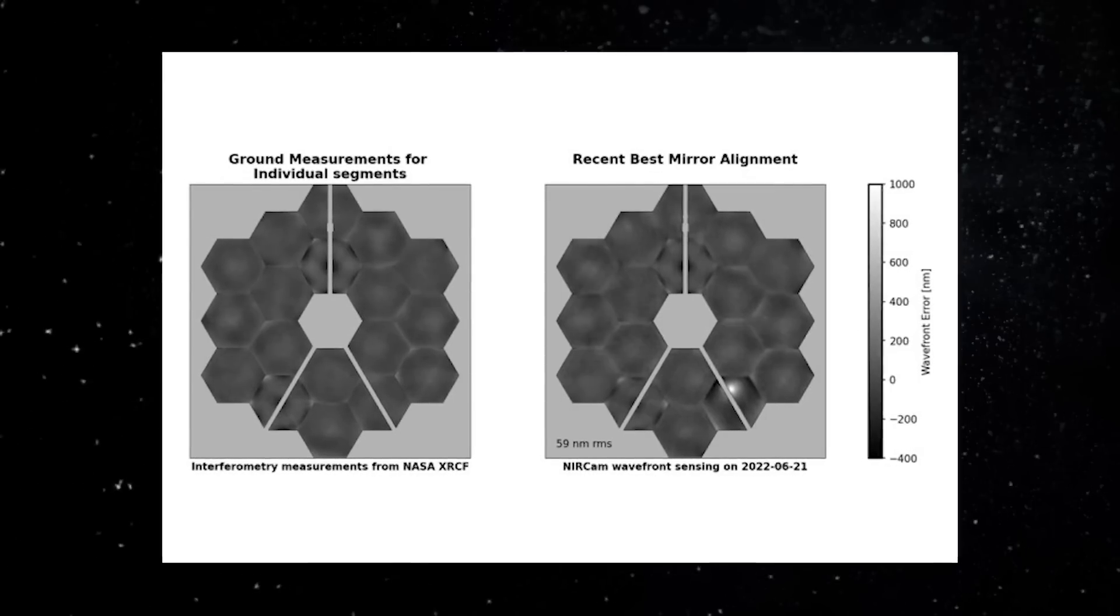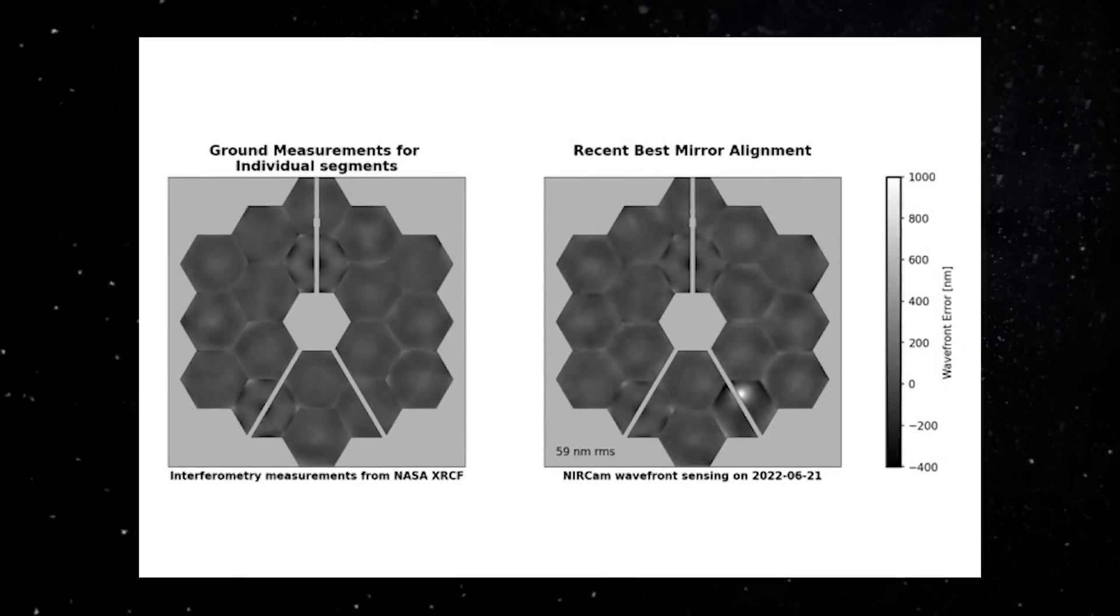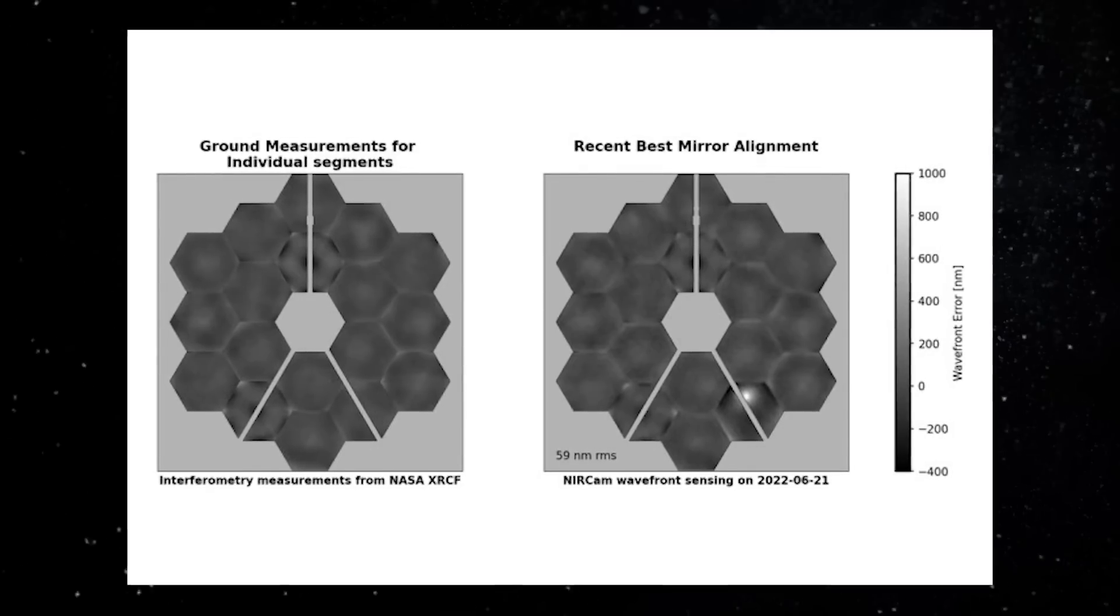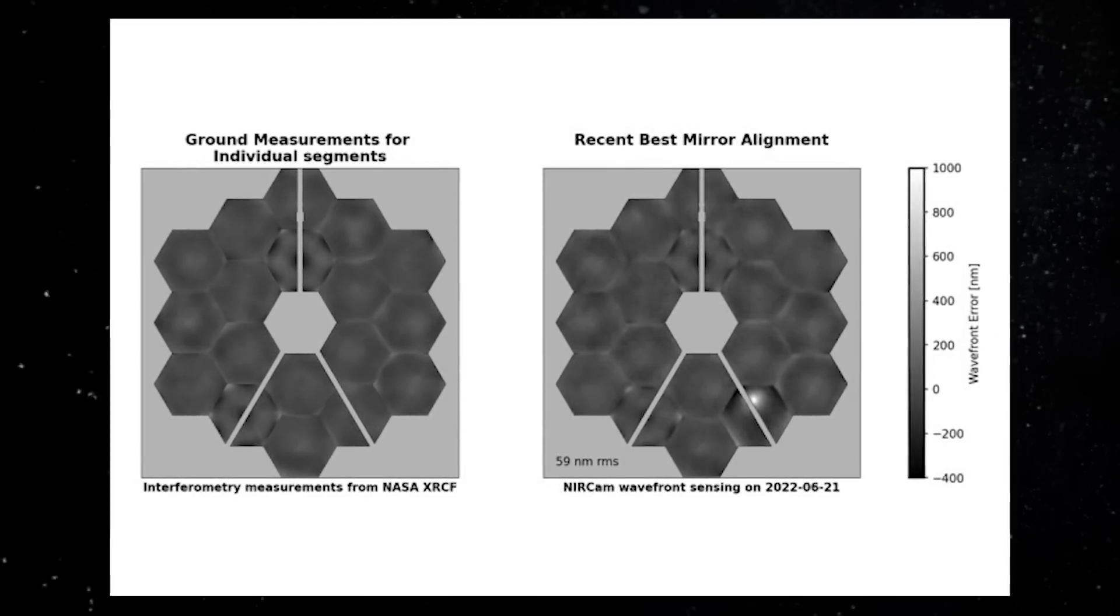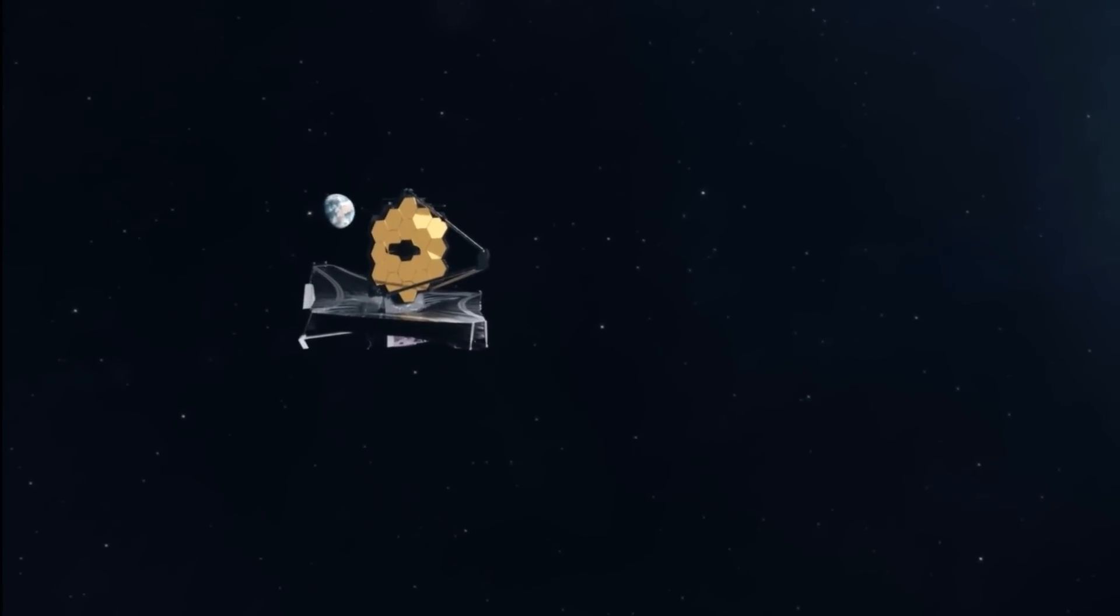The NASA report says the single micrometeorite impact that occurred between the 22nd to the 24th of May 2022 exceeded pre-launch expectations of the damage for a single micrometeorite. The JWST team said the impact increased the error associated with the entire main mirror.